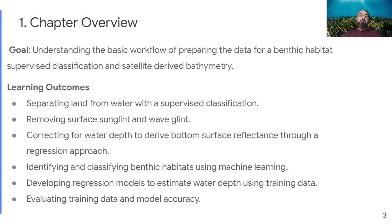These outputs are also critical for other important aspects of coastal marine life, since it is under the pressure of climate change and urbanization. Coral reefs, mangroves, and seagrasses are among the most critical habitats in the coastal zone that we are slowly losing in many regions of the globe. A third outcome will be the separation of land from water with a supervised classification in order to focus on the marine coastal system.